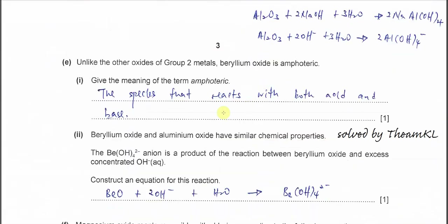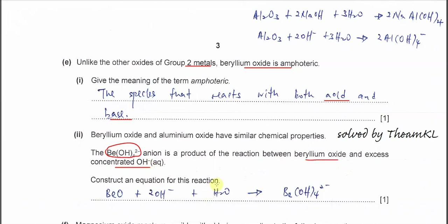Part E: unlike the other oxides of Group 2 metals, beryllium oxide is amphoteric. Amphoteric means the species reacts with both acid and base or alkali. Part 2: beryllium oxide and aluminium oxide behave very similarly when they react. This is the anion that forms when beryllium oxide reacts with concentrated hydroxide. To write this equation, recall what you learned about aluminium oxide reacting with hydroxide.